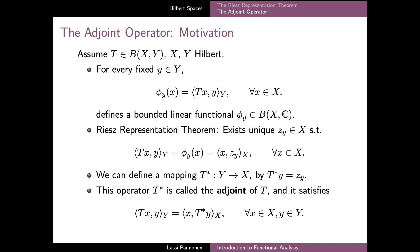In this video we will define the concept of an adjoint of a bounded linear operator T between two Hilbert spaces X and Y. As background motivation, we note that if we let Y be a fixed element of Y, then we can define a bounded linear functional on X such that its value at X is the inner product between TX and Y. This functional is indeed both linear and bounded.